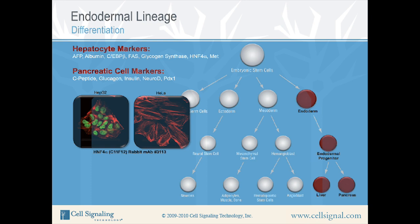First is IF analysis showing nuclear expression of HNF4-alpha in HEPG2 cells, but not in HeLa cells. HNF4-alpha is a transcription factor found in liver that plays a role in lipid metabolism and gluconeogenesis. HNF4-alpha antibody has been labeled green. Actin filaments have been labeled red with a Lexafluor 555 phalloidin. HEPG2 is a human liver cell line and shows a positive signal. HeLa is an epithelial cell line and serves as a negative control.